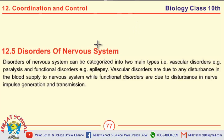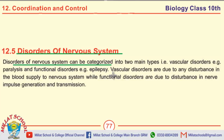The last topic of the chapter coordination and control is disorders of the nervous system. How many types of disorders of the nervous system are there? Disorders of the nervous system can be categorized into two main types. The two main types are: number one, vascular disorders, and number two, functional disorders.